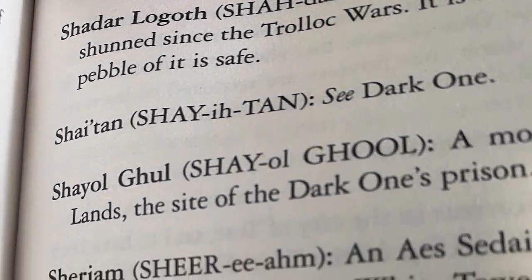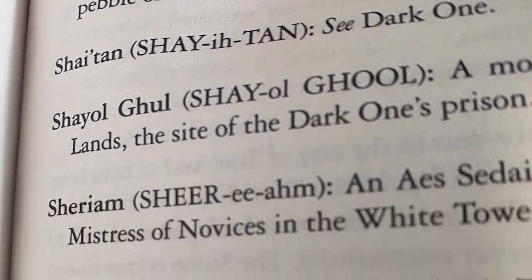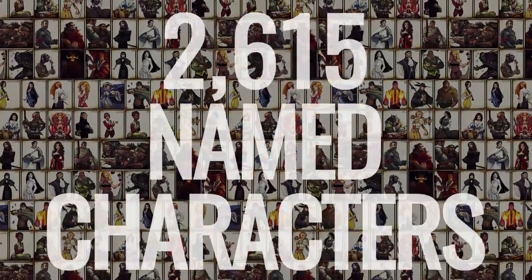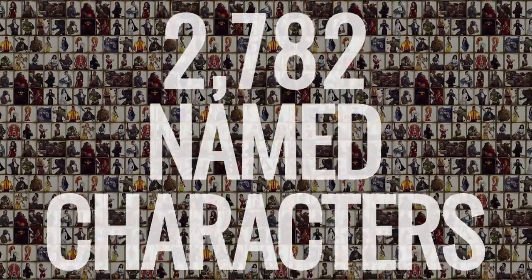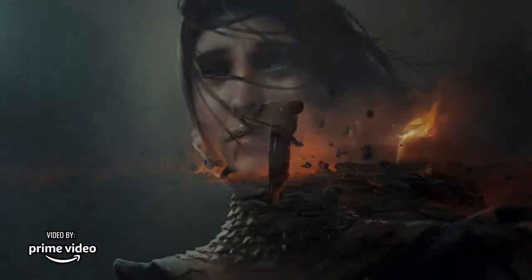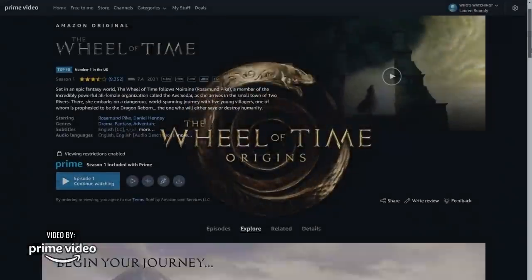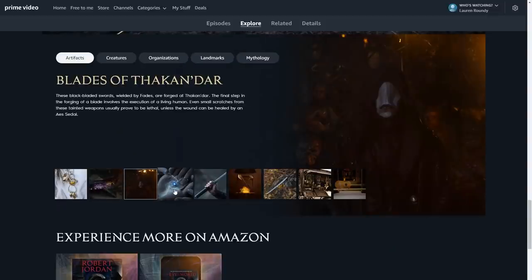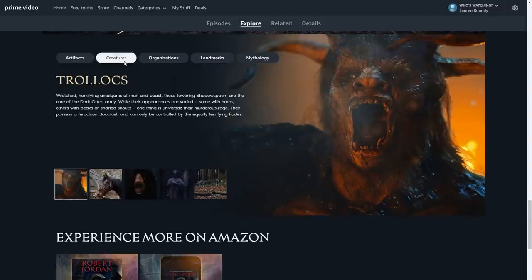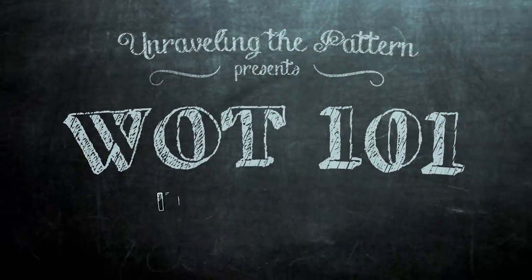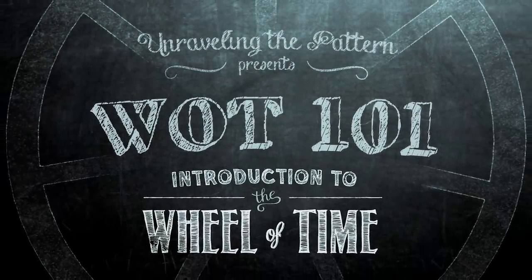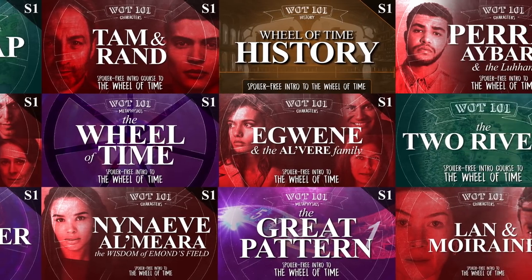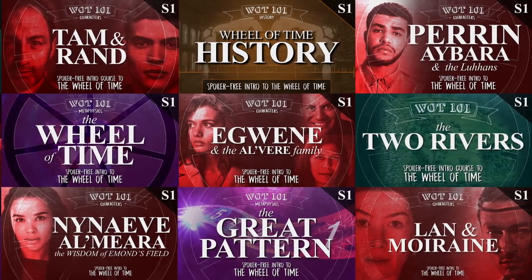Each of the 14 Wheel of Time books has a glossary at the end filled with definitions just to help the reader follow all of the complexities of the series. There are over 2,780 named characters in the Wheel of Time books. Amazon Prime Video has created bonus animations and supplementary materials through their Explore and X-Ray bonus content sections that explain various terms, characters, and locations to new viewers, just like the glossaries at the back of each book. I've also created an ever-expanding series of videos called WoT 101 — please go check them out.